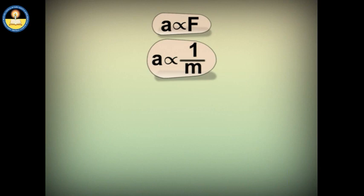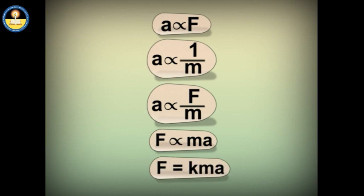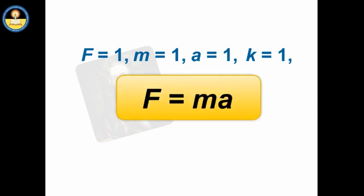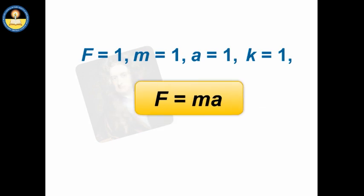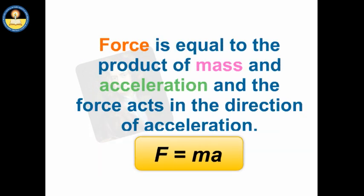Combining the two conditions, acceleration depends upon the ratio of force and mass. In other words, force depends upon the product of mass and acceleration. By applying a unit force, a unit mass is accelerated by a unit acceleration. Hence, force is measured as the product of mass and acceleration. This is Newton's second law of motion: force equals the product of mass and acceleration, and the force acts in the direction of acceleration.